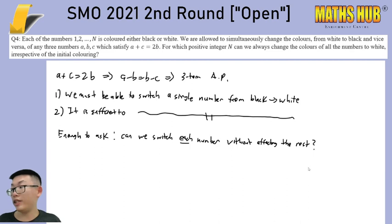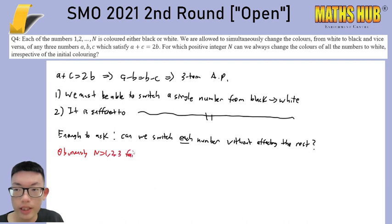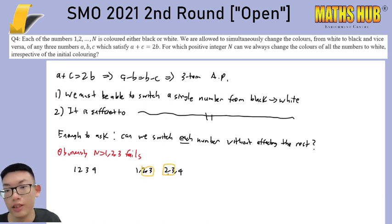Let's start off with looking at some things that we can or cannot do. We experiment a little bit. Obviously, we cannot do it for 1, 2, 3. Now, let's say that we have 1, 2, 3, 4. The only arithmetic progressions available are 1, 2, 3, and 2, 3, 4. So we won't be able to swap 2 without swapping 3 because they always come together. You will never be able to get it for n equals to 4.